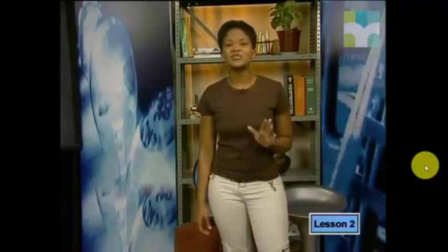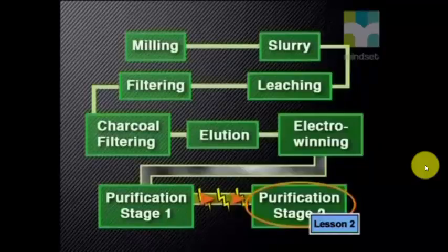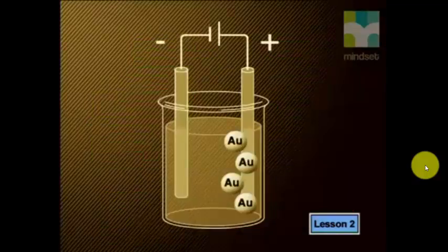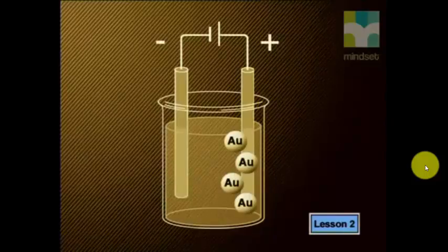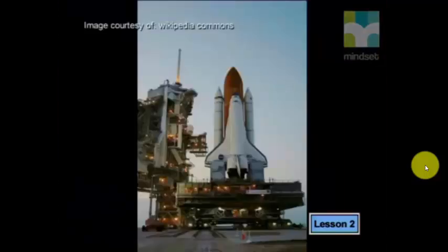Certain uses require gold that is 99.99% pure, so a second stage of refining is required. In this stage, electricity is used: the 99.5% pure gold from stage one is melted and electricity is passed through it. Pure gold deposits on the positive electrode, is then melted and cast as billets. This highly pure gold is suitable for electronics, space technology and medical equipment.